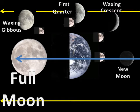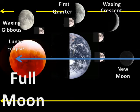In this diagram, the moon is closer to the earth than it actually is. You might think that the moon would fall in the earth's shadow at least once a month. However, this doesn't happen often. There is a lunar eclipse when the moon does fall into the earth's shadow.